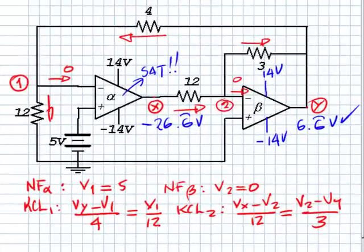We begin this video where we left in the previous one. We promised we would assume that the op-amp was saturated at minus 14 volts, just to demonstrate that that wasn't so.